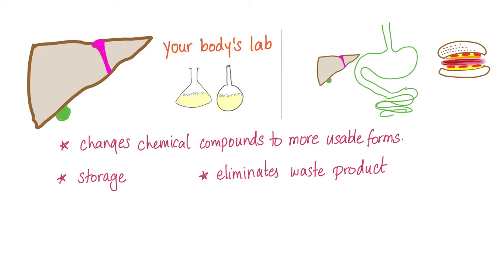Let's talk about the GI and the liver. You eat from your mouth, and then food goes to the stomach, then the small intestines. Not all of the absorbed stuff is immediately useful. We need the liver — your body's laboratory — to tell us: is it useful now? Should we wait and store it? Should we convert it to other more usable stuff? Your body's laboratory changes chemical compounds, stores products, and eliminates waste products.